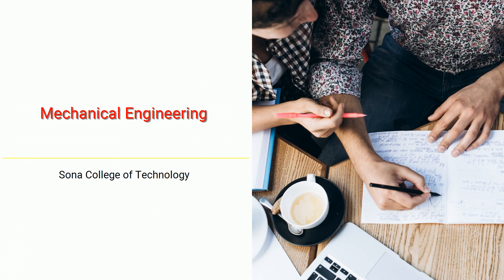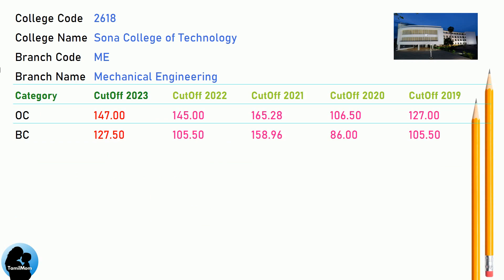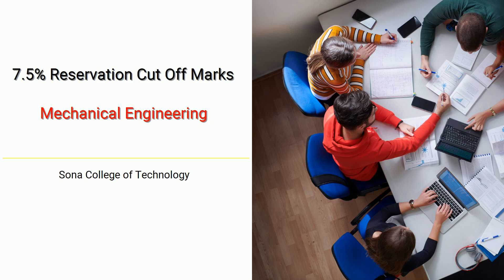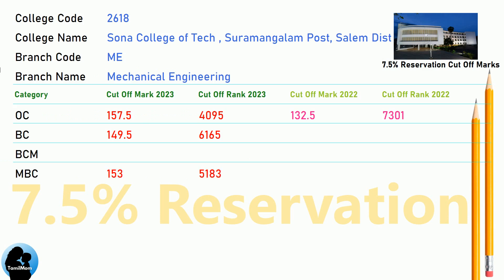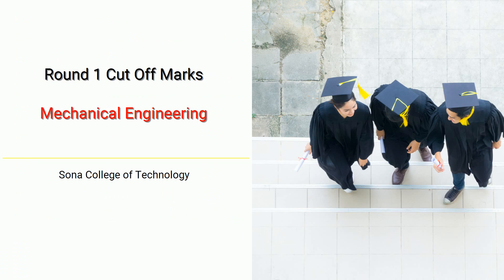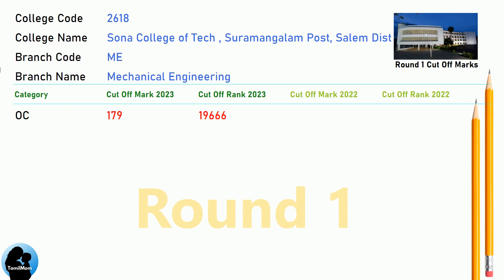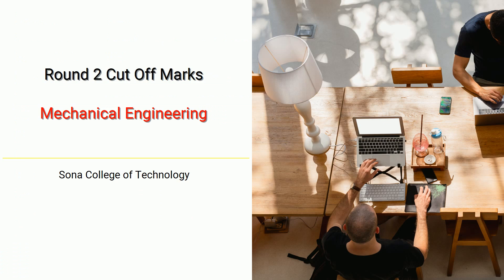DNA cut-off for Sona College of Technology in Mechanical Engineering. DNA 7.5 Reservation cut-off for Sona College of Technology in Mechanical Engineering. DNA Round 1 cut-off for Sona College of Technology in Mechanical Engineering. DNA Round 2 cut-off for Sona College of Technology in Mechanical Engineering.